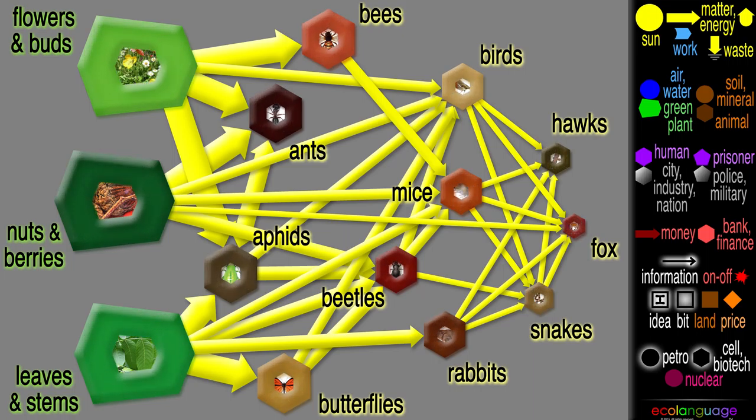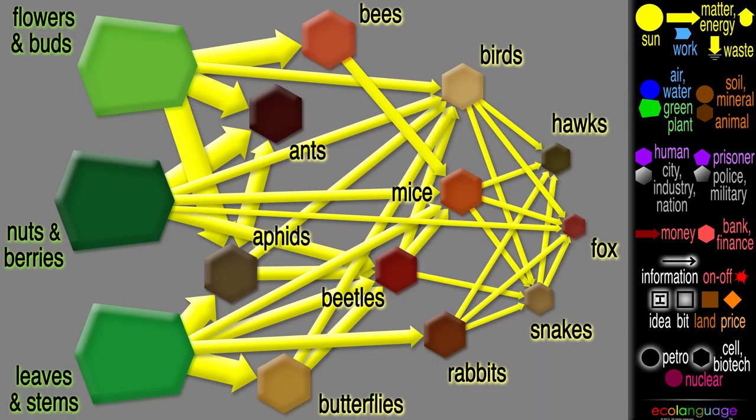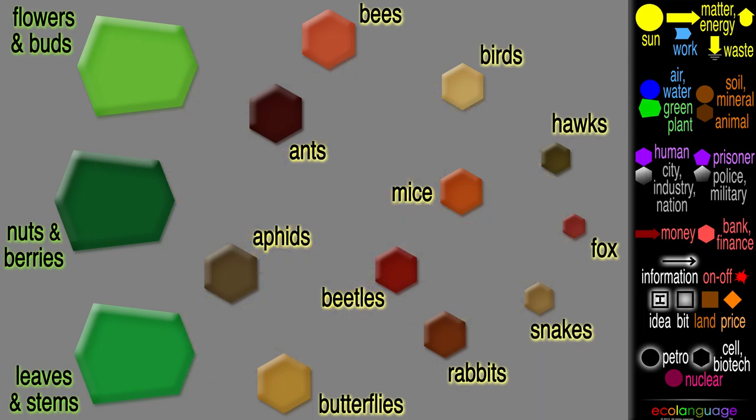Most food webs have more species and more connections. But just like this little web, they all tend to flow from the bottom to the top.